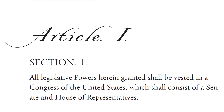This video is on Article 1, Sections 1 through 10 of the U.S. Constitution. Article 1, Section 1: All legislative powers herein granted shall be vested in a Congress of the United States, which shall consist of a Senate and House of Representatives.